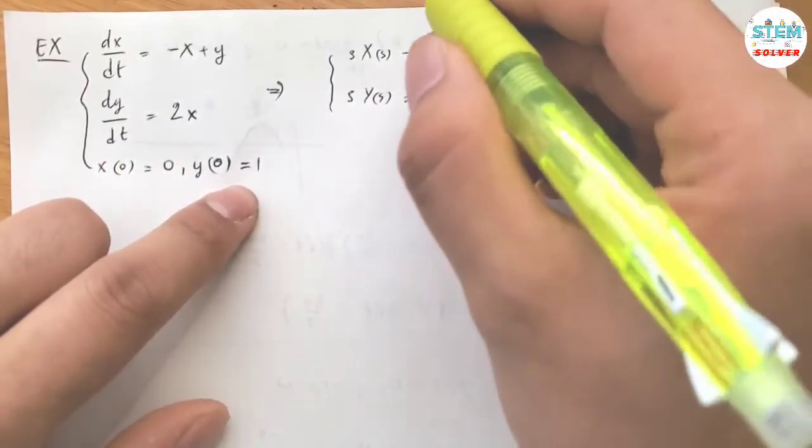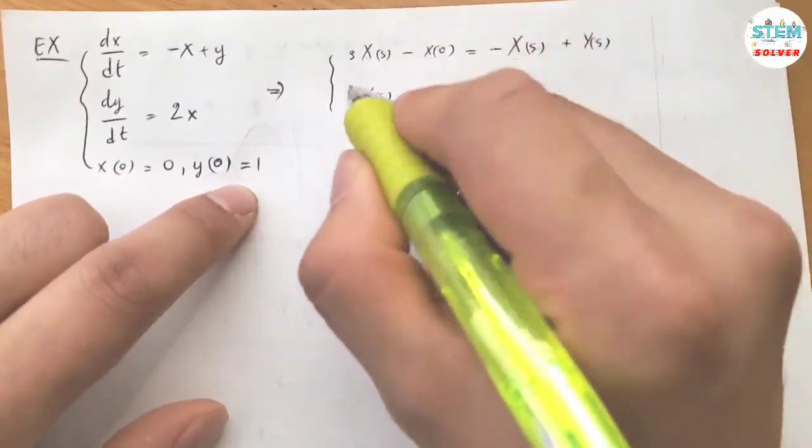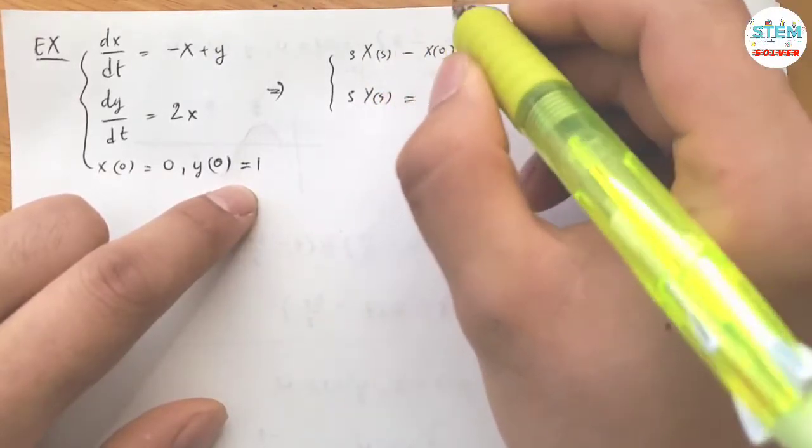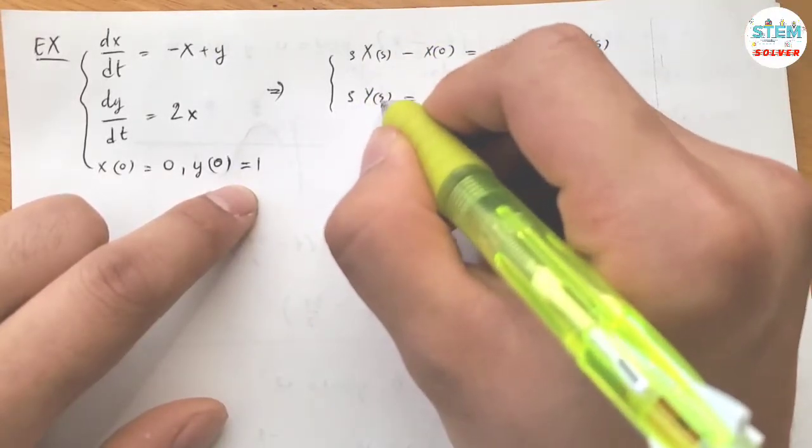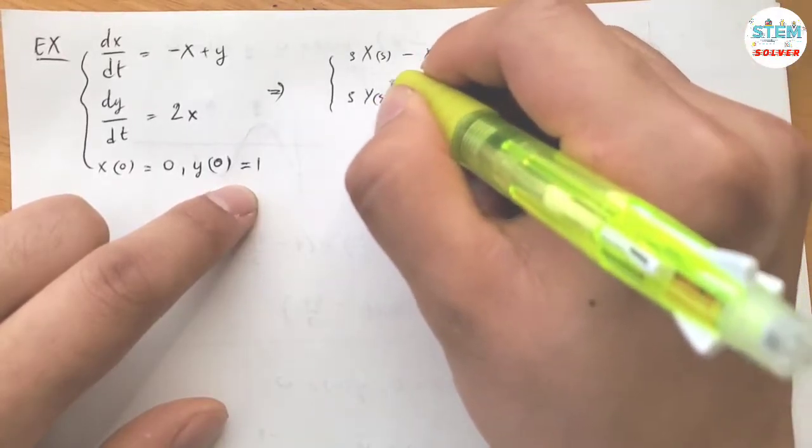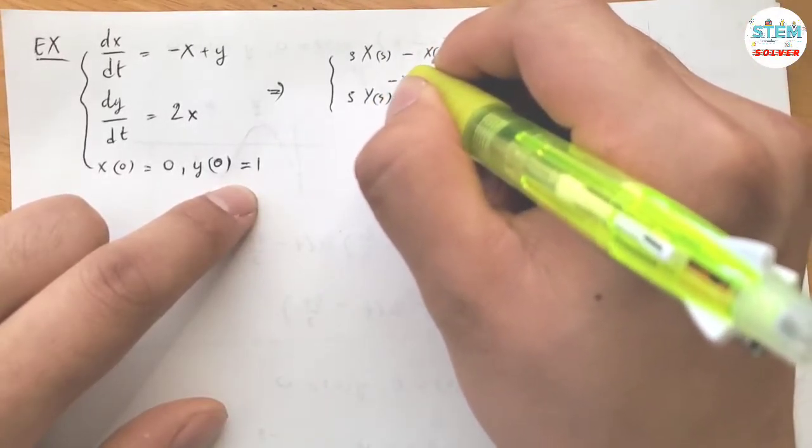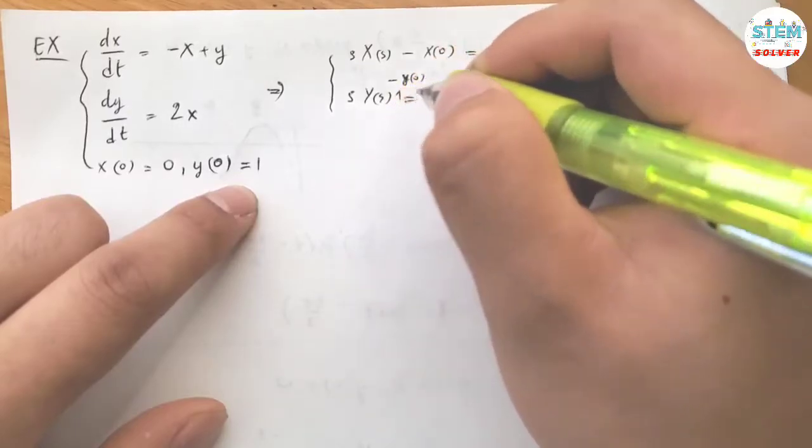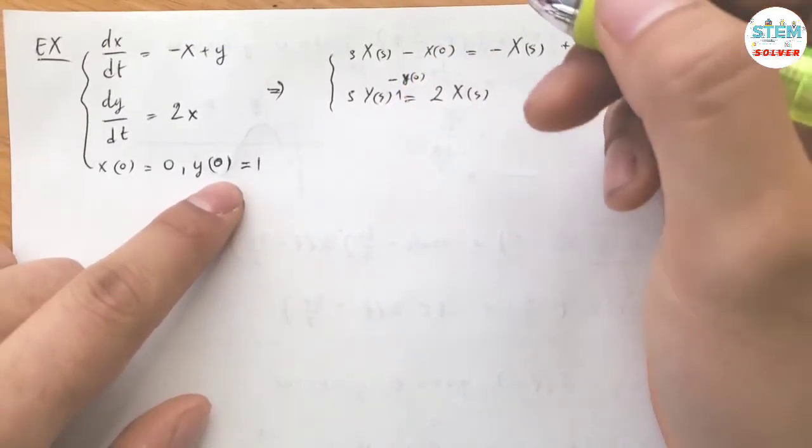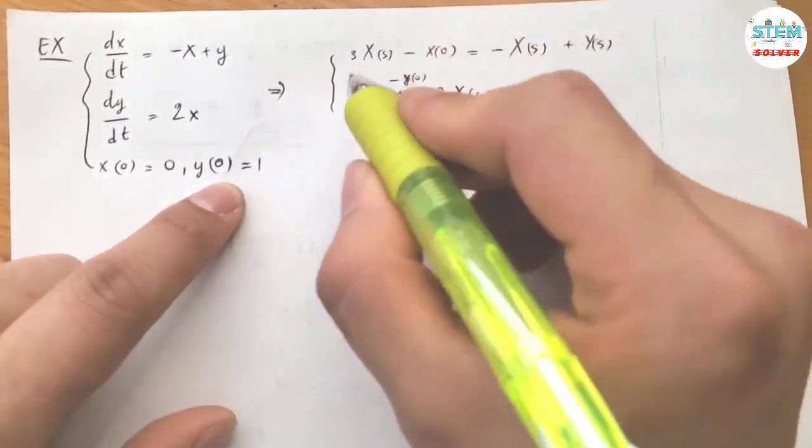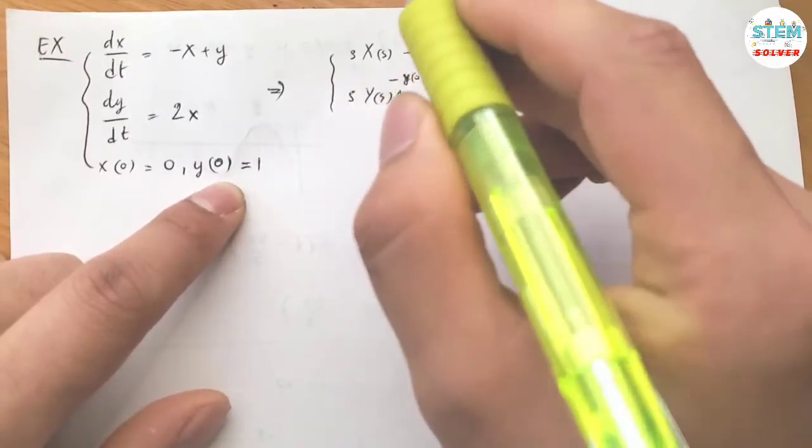Oh, I forgot to subtract. So you have S and subtract down until you get S times Y of 0, remember that theorem? Alright, now plug in the condition and isolate the X and Y alone.